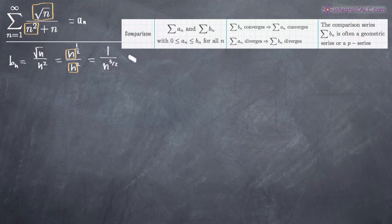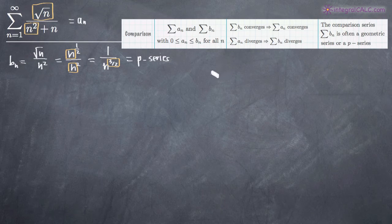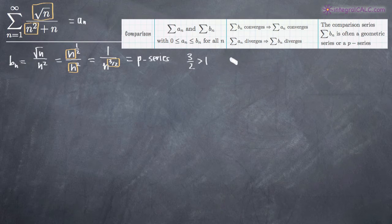We should recognize that this is a p-series: we've got one in the numerator and a variable raised to an exponent in the denominator. In this case, the exponent — and this is the important part — is three-halves. So we have a p-series where p equals three-halves. From studying p-series, whenever the exponent is greater than one, the series converges. Three-halves is greater than one, which means 1 over n to the three-halves converges, so b sub n, our comparison series, converges.